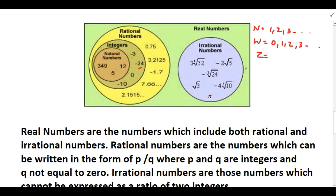Then come rational numbers. Rational numbers are the numbers which can be written in the form of p by q, where q should not be equal to 0 and p and q are integers. For example, minus 1 can be written as minus 1 by 1; 25 can be written as 25 by 1; and 0.75 can be written as 75 by 100. So all these are rational numbers.